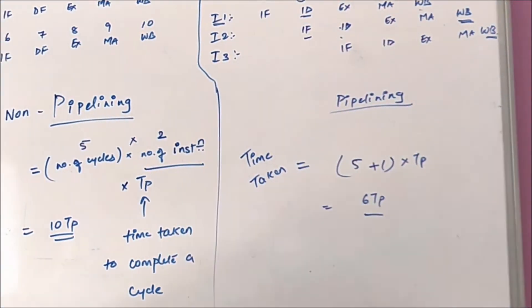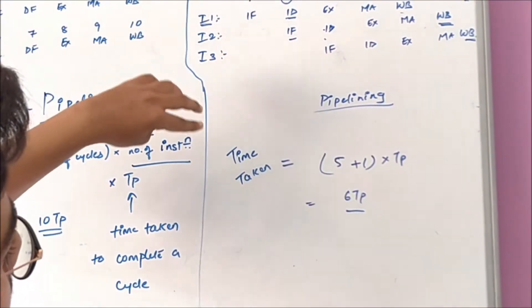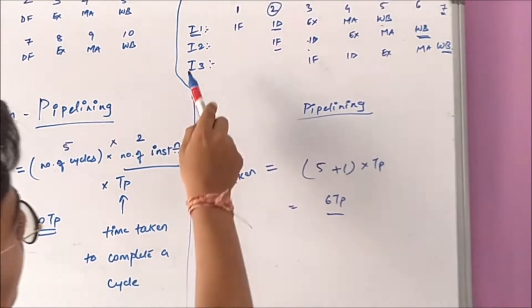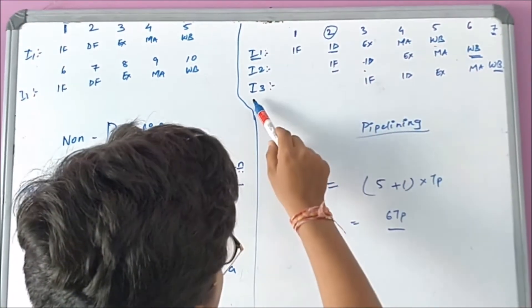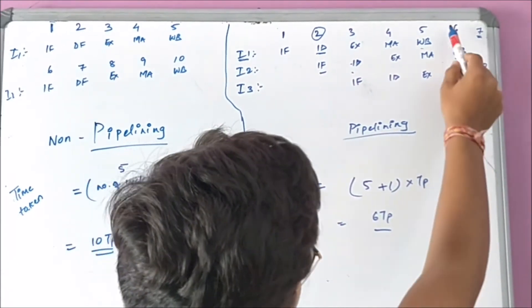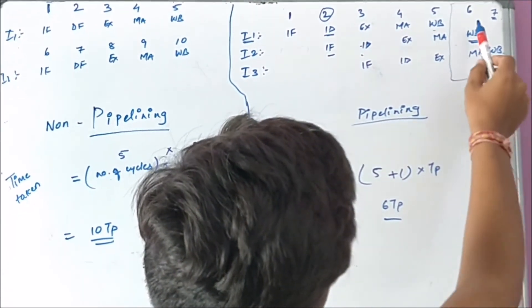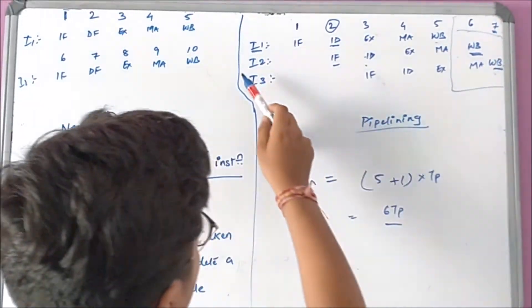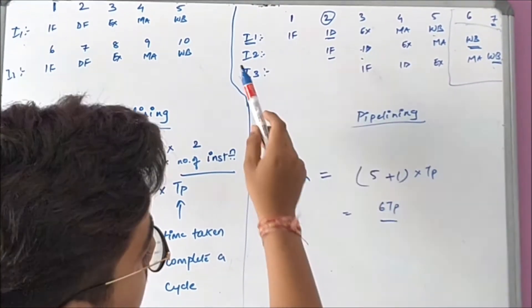We can see that apart from I1, every other instruction will be completed in a single cycle. I2 is completed at six, I3 is completed at seven. Apart from I1, we need only two cycles for completing I2 and I3.